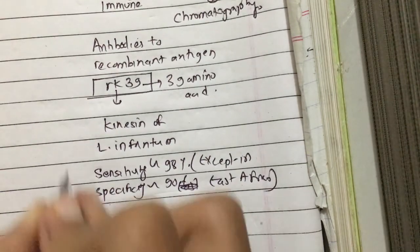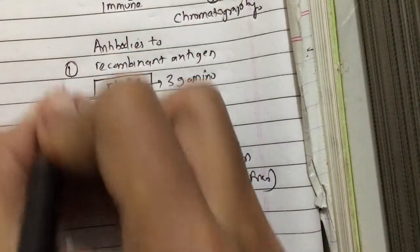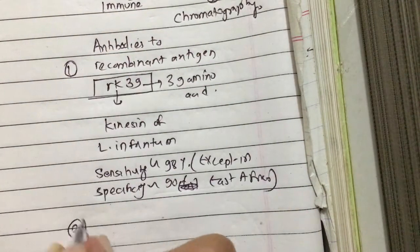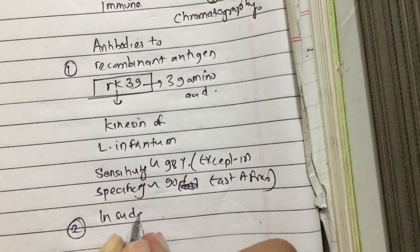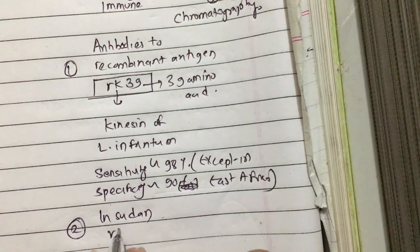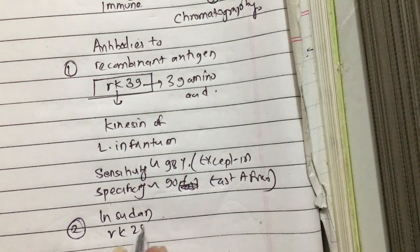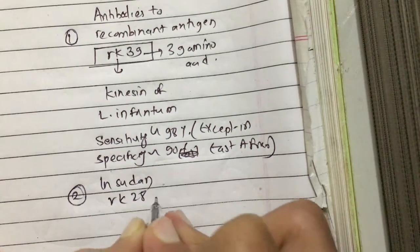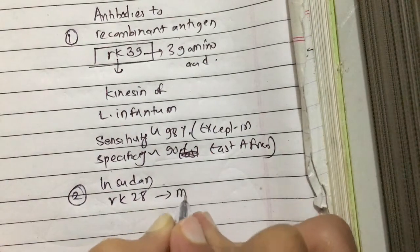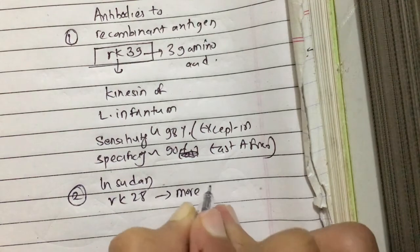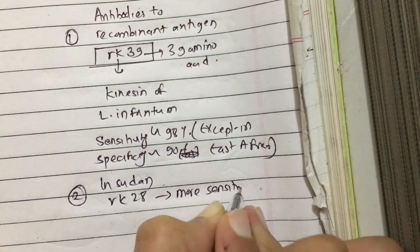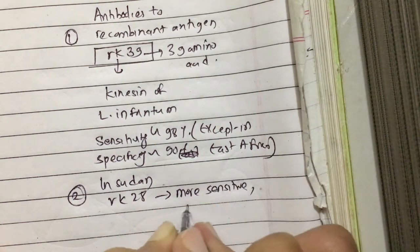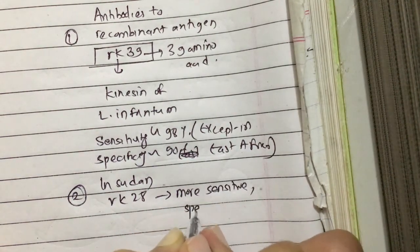In Sudan, rK28 is more sensitive and more specific than rK39.